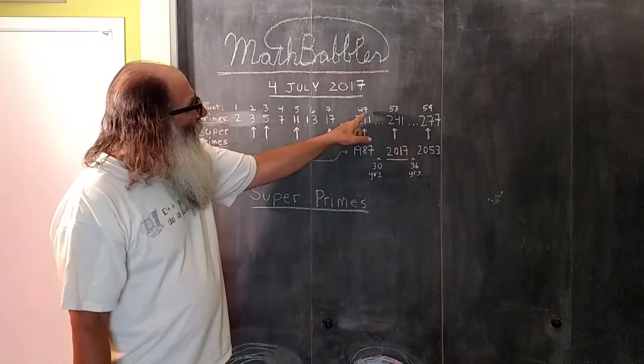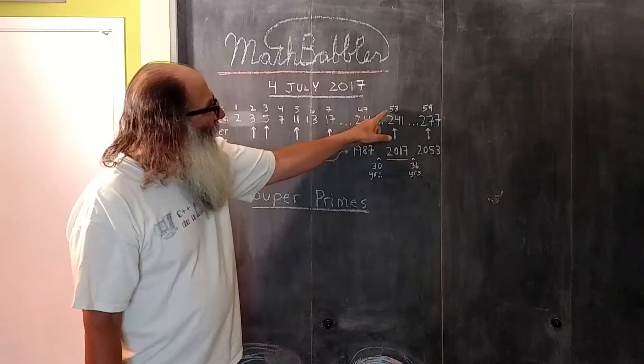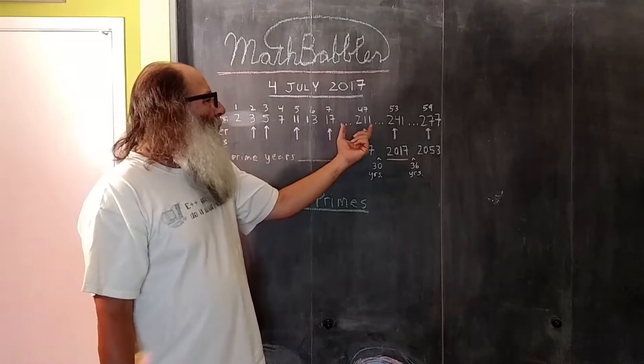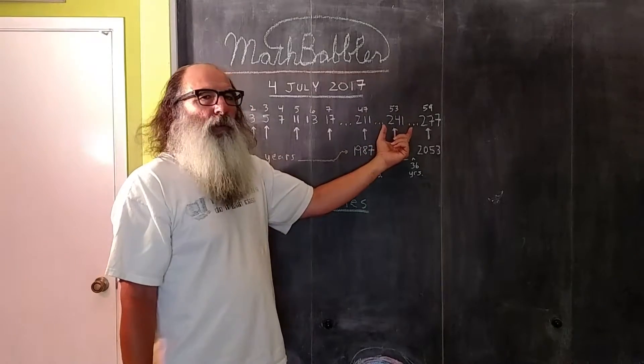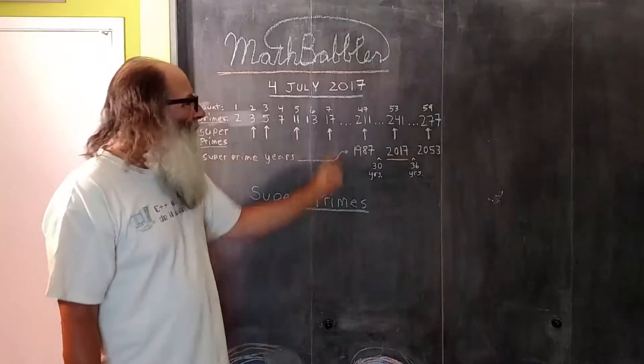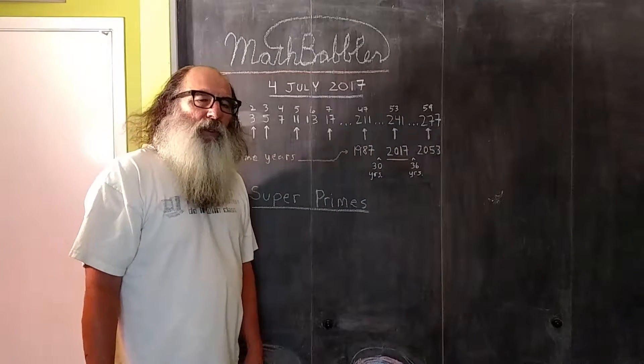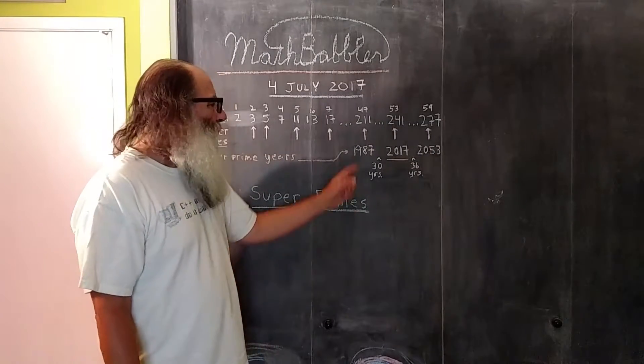There are no prime numbers between 47 and 53. So the super prime that comes before 241 is 211. That difference is 30, so that means the last time the United States was super prime aged was 1987.